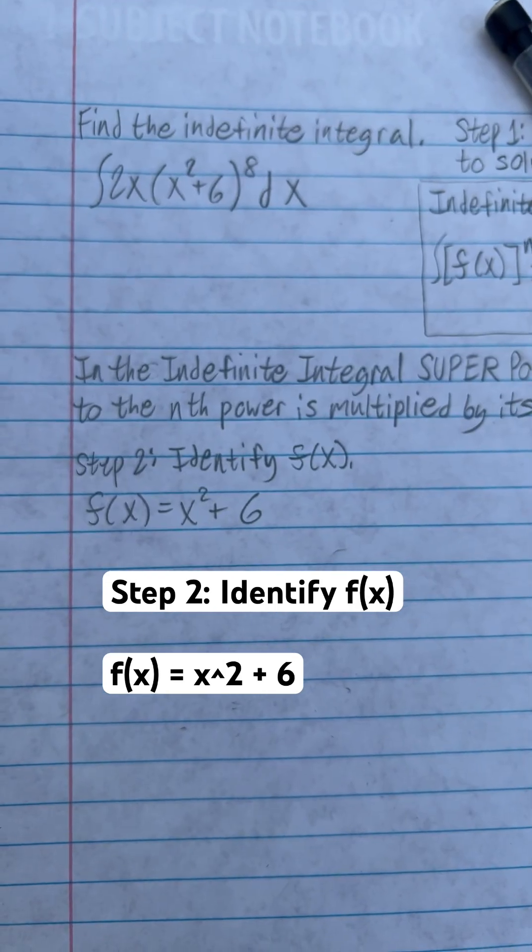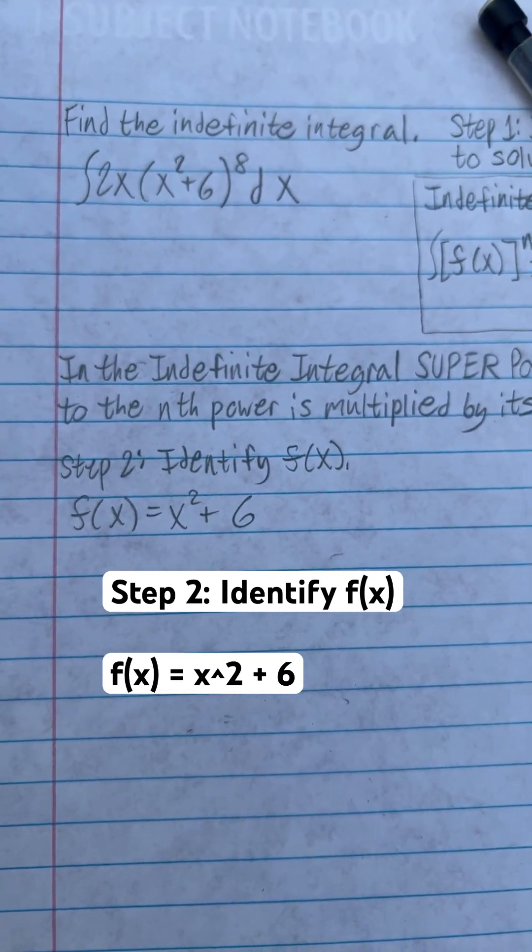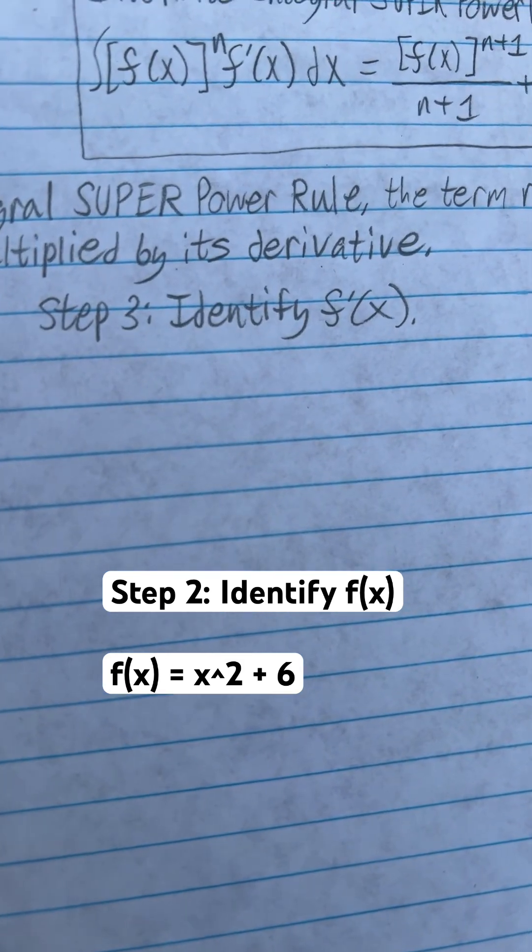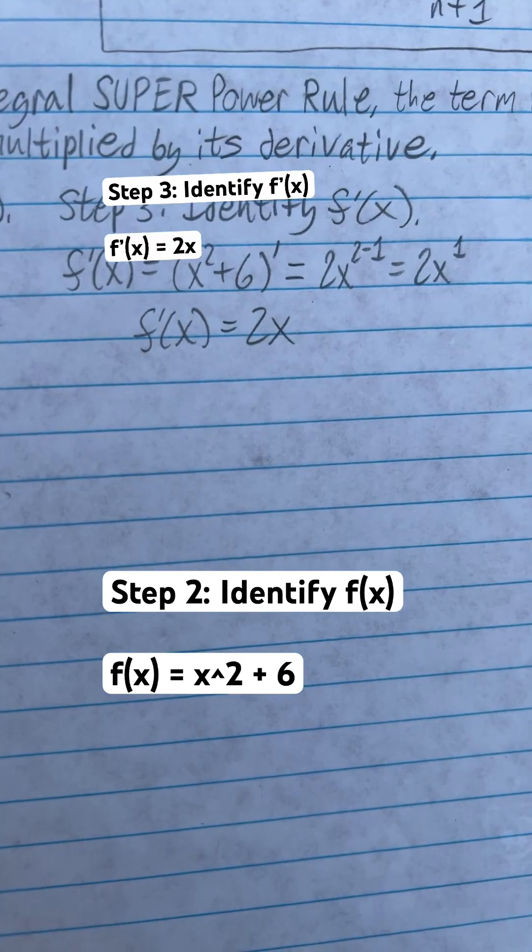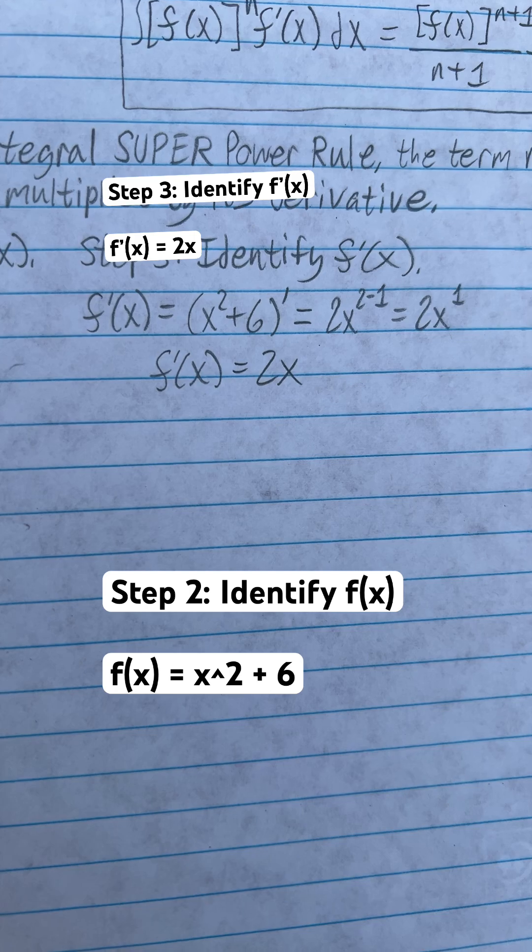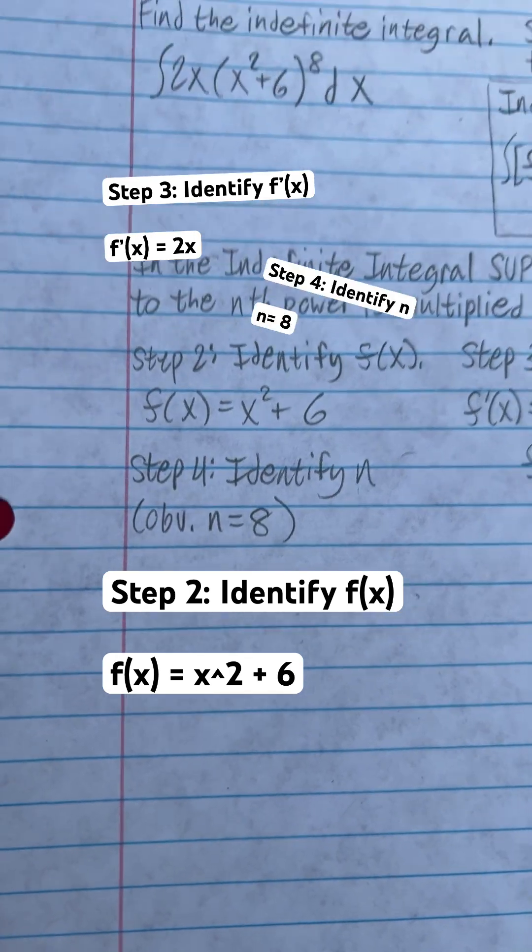Now step 2 is to identify f of x. f of x is x squared plus 6. Step 3 is to identify derivative f of x. Derivative f of x is 2x. And you should know that n is equal to 8.